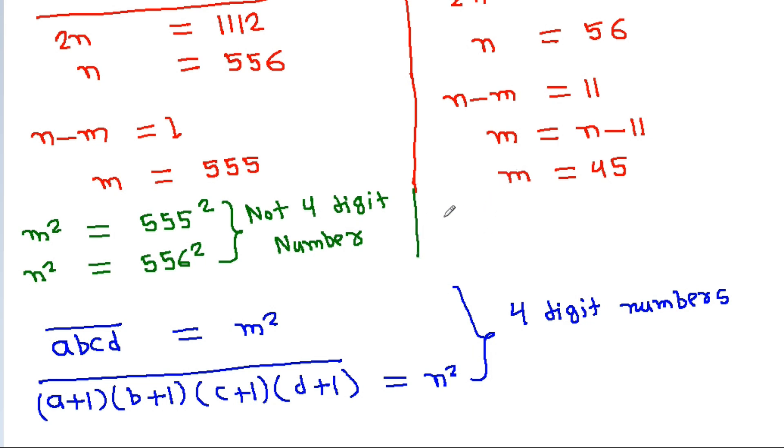And here M squared is equal to 45 squared, which is 2025. And N squared is equal to 56 squared, that is 3136. And these are 4 digit numbers.